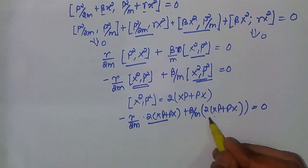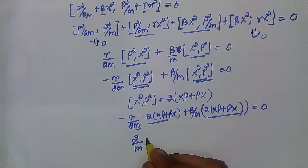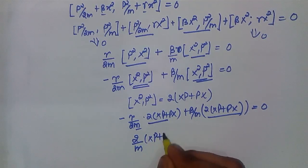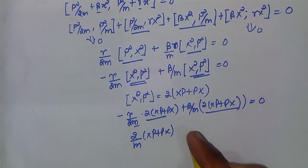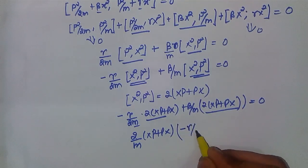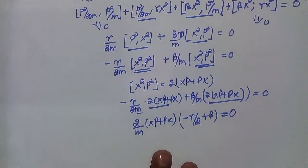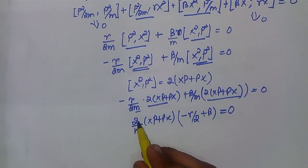Now if we take this quantity common, we get 2iℏ/m (XP + PX), and also taking m, we have 2iℏ/m (XP + PX) times (-γ/2 + β) = 0.